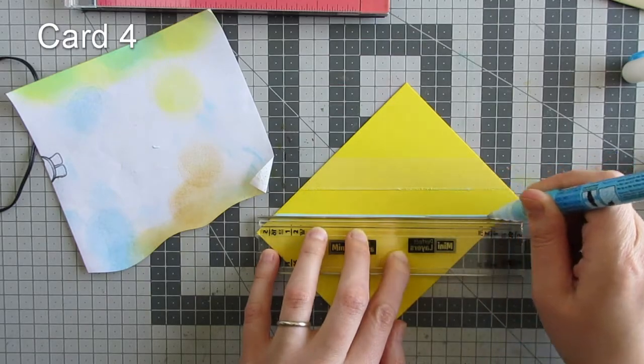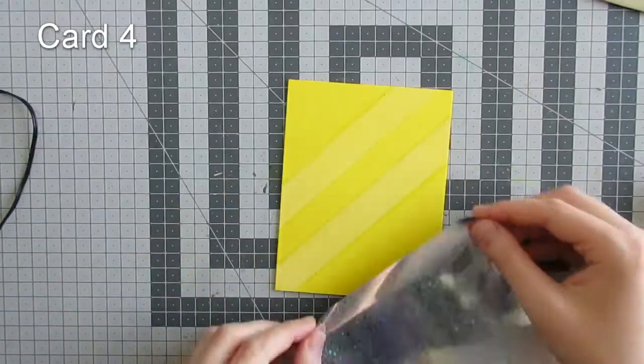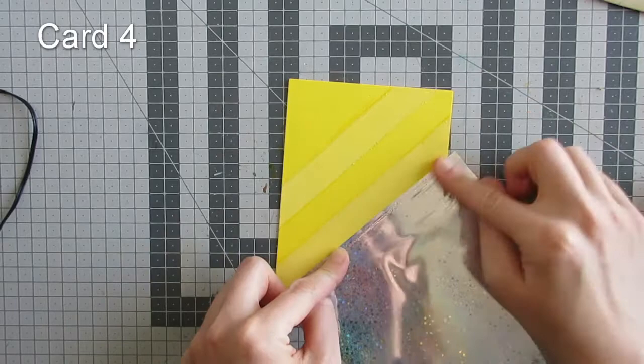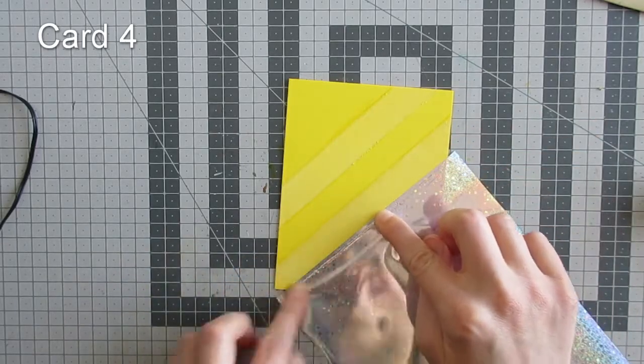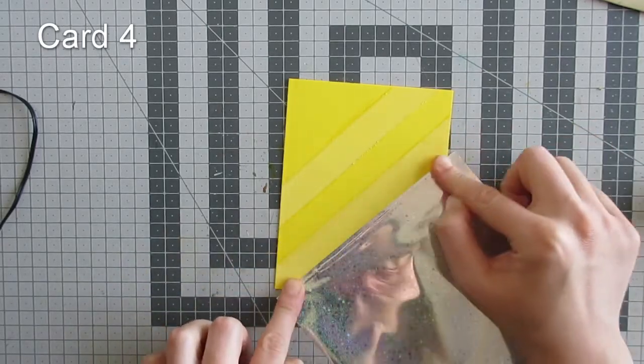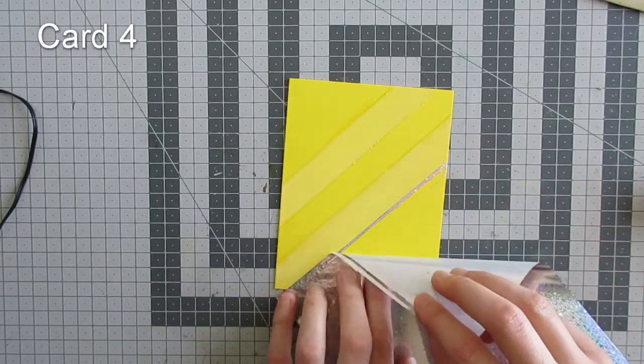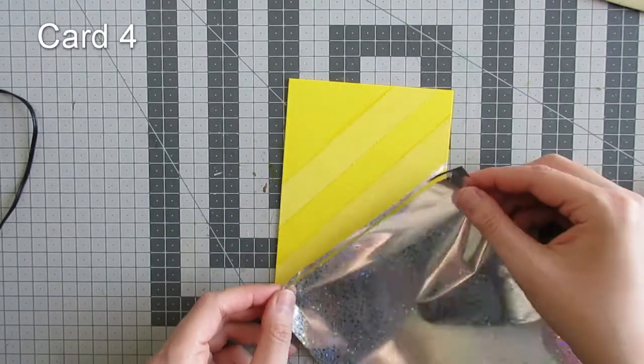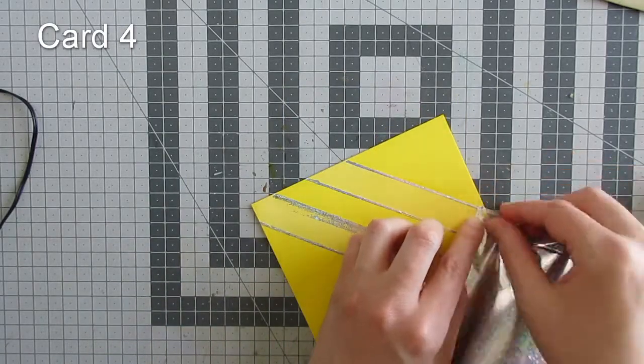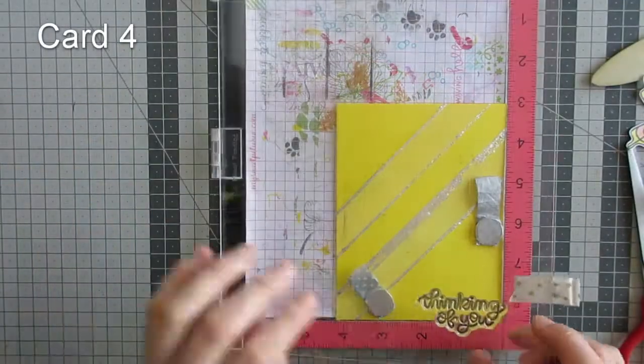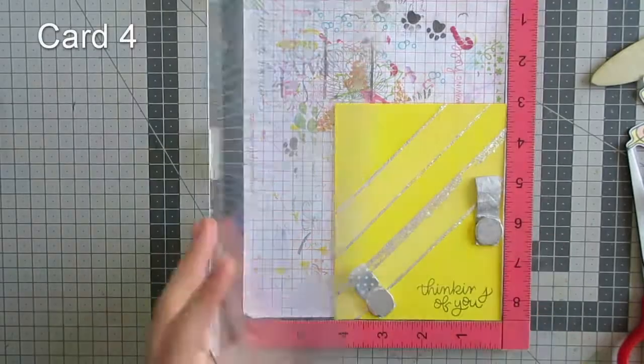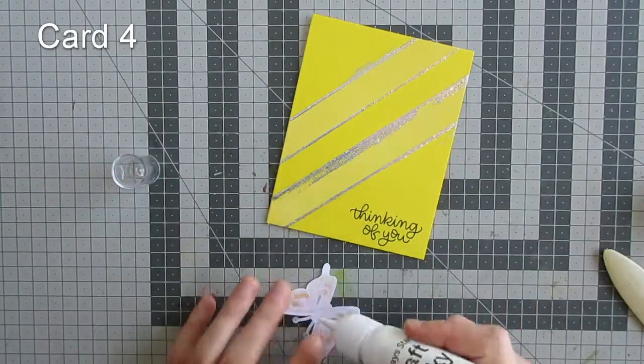I set the card base aside to dry once I had all the lines of glue in place. I'm using the Sparkling Silver Fancy Foil and applying that over my glue where it's tacky. It has a bit of a distressed look where the glue smudged.